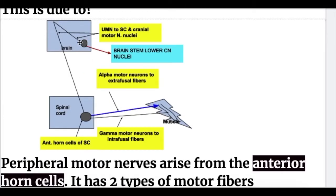The peripheral motor nerve arises from the brainstem lower motor cranial nuclei and anterior horn cells of the spinal cord. These cranial nerve nuclei and anterior horn cells are the lower motor neurons, controlled by corticobulbar and corticospinal fibers. From the anterior horn cell arises the peripheral nerve, containing alpha and gamma motor neurons. Alpha motor neurons innervate extrafusal fibers and are thick and fast conducting; gamma motor neurons innervate intrafusal fibers and are thin and slow conducting.